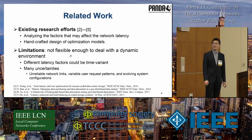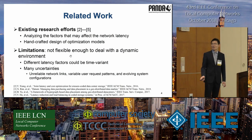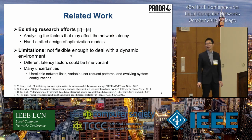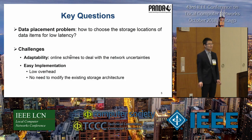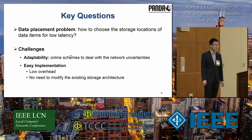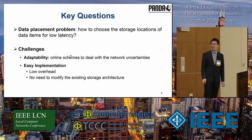Existing research efforts focus on analyzing different factors that may affect network latency with handcrafted design of optimization models. The limitations to these solutions are obvious — they are not flexible enough to deal with network uncertainties such as unreliable network links, variable user request patterns, and evolving system configurations. Different latency factors could be time-variant, and some are with different proportions in various application scenarios. The data placement problem can be defined as: how to choose the storage locations of data items for low latency, facing the challenges of adaptability and easy implementation. The proposed scheme should be an online algorithm to deal with network uncertainties and be adopted by a realistic storage system without modifying existing storage architectures.